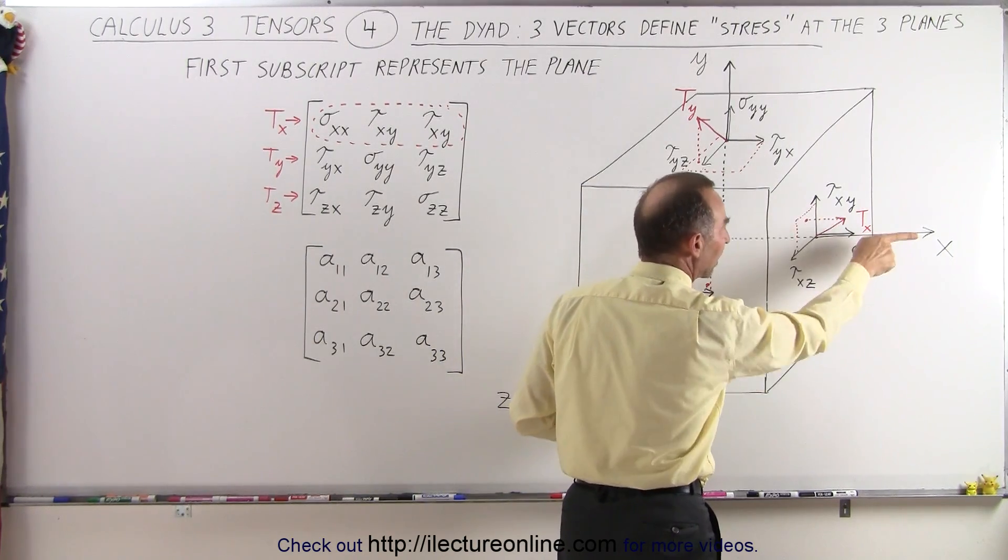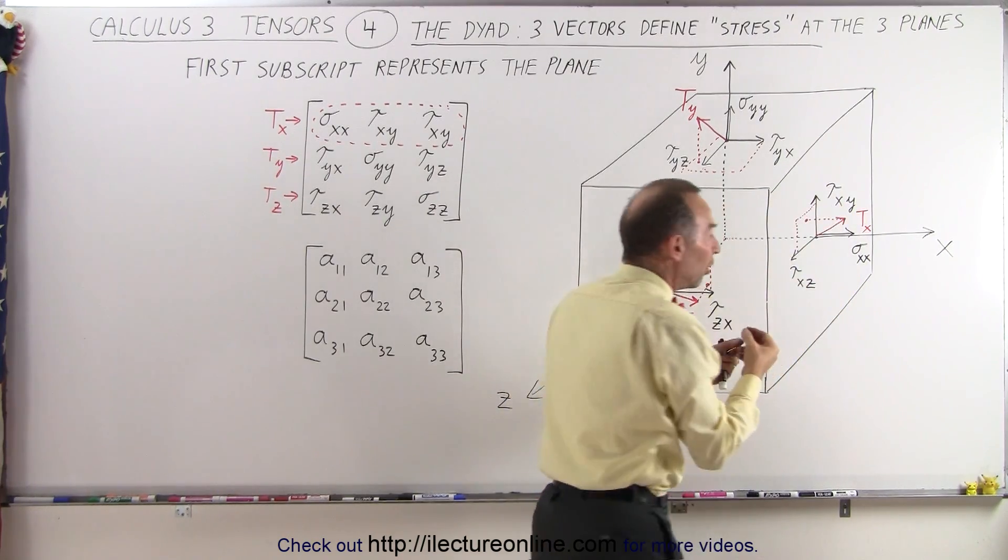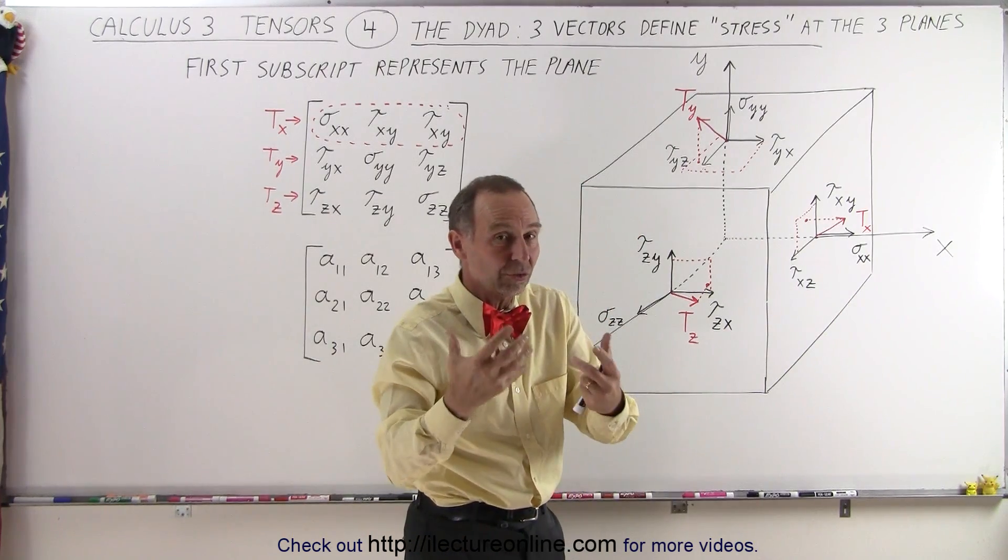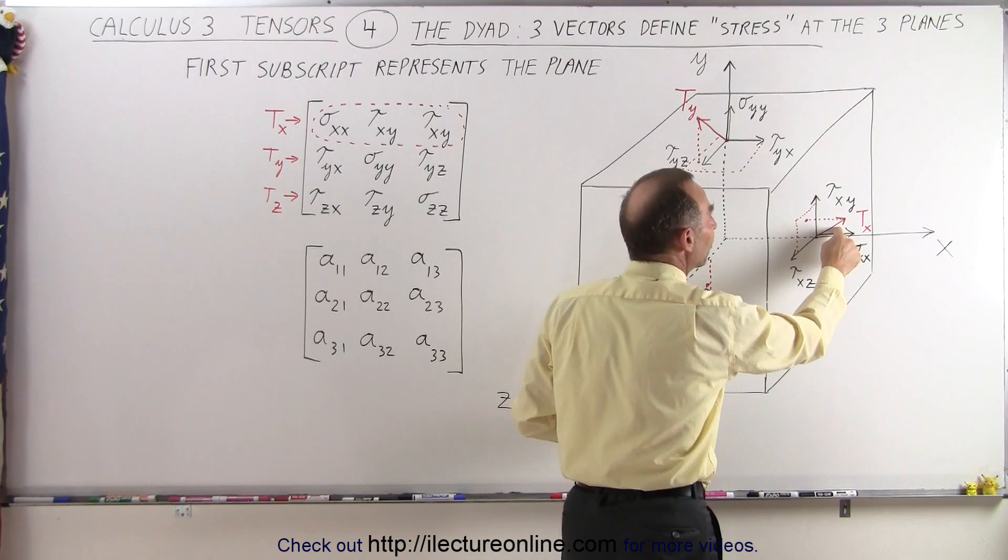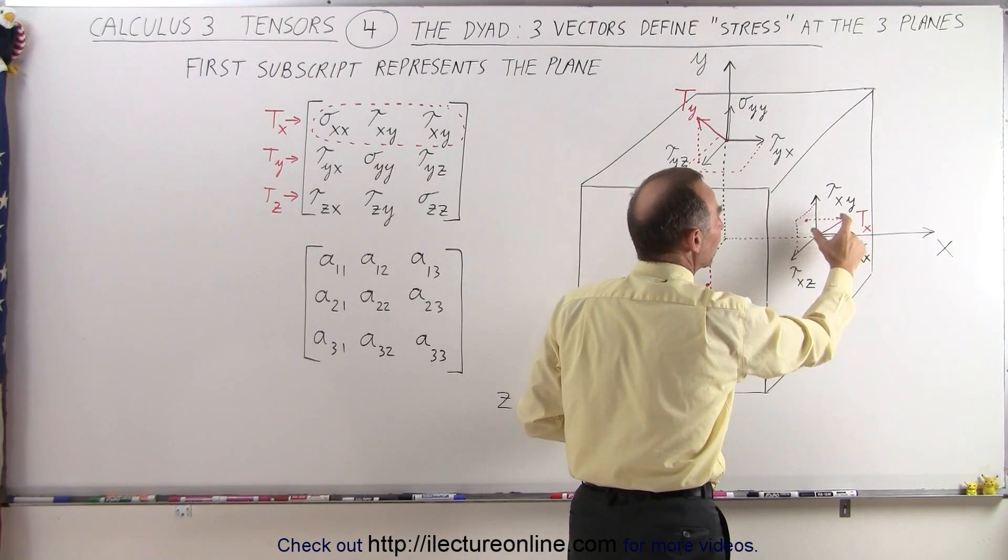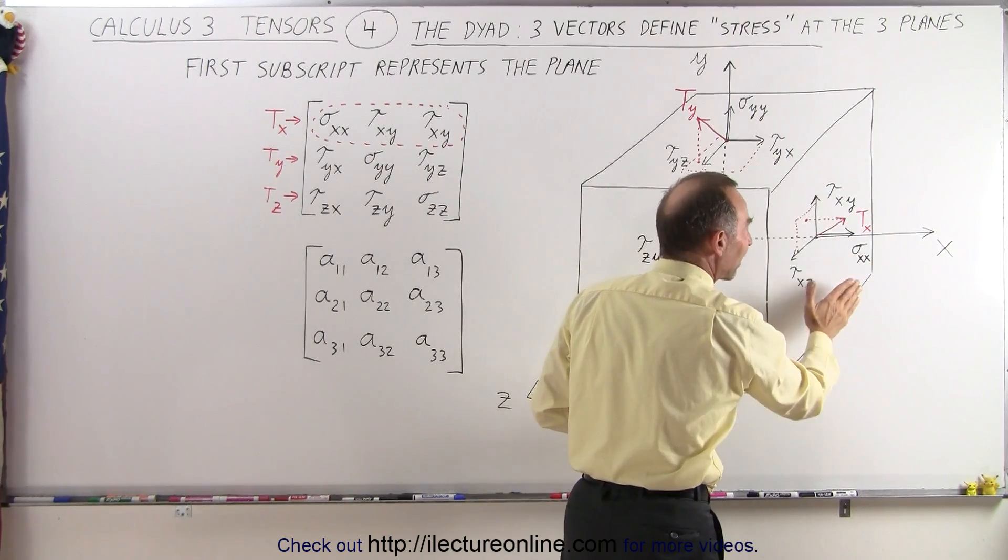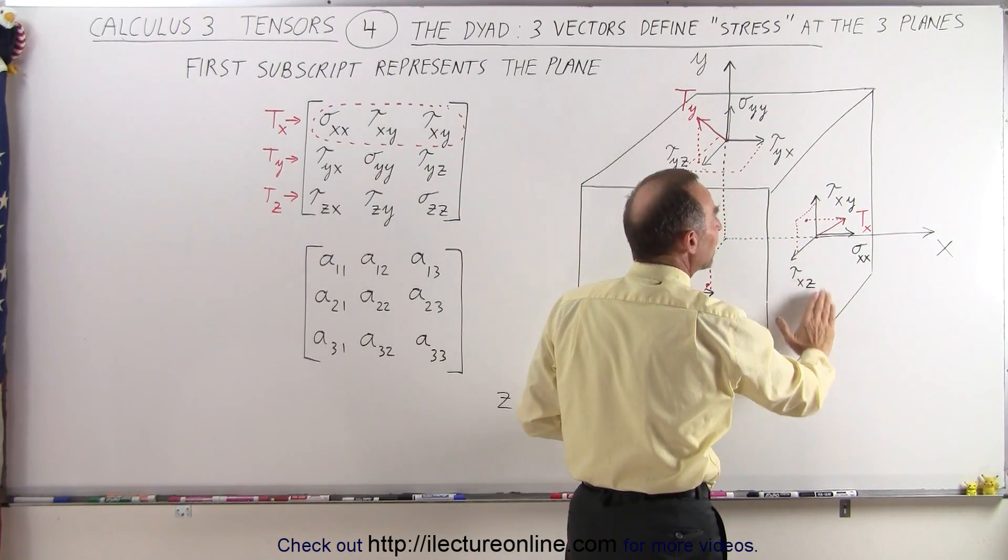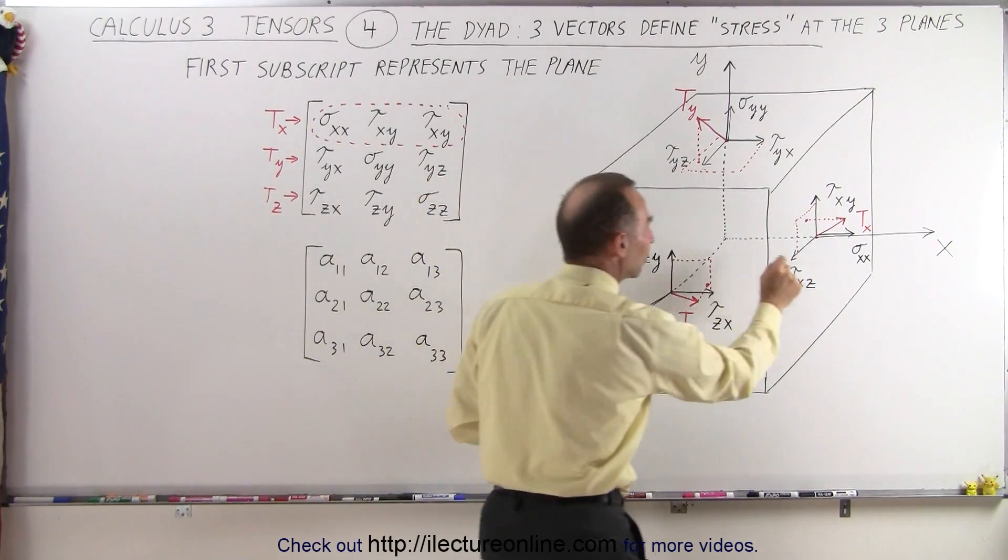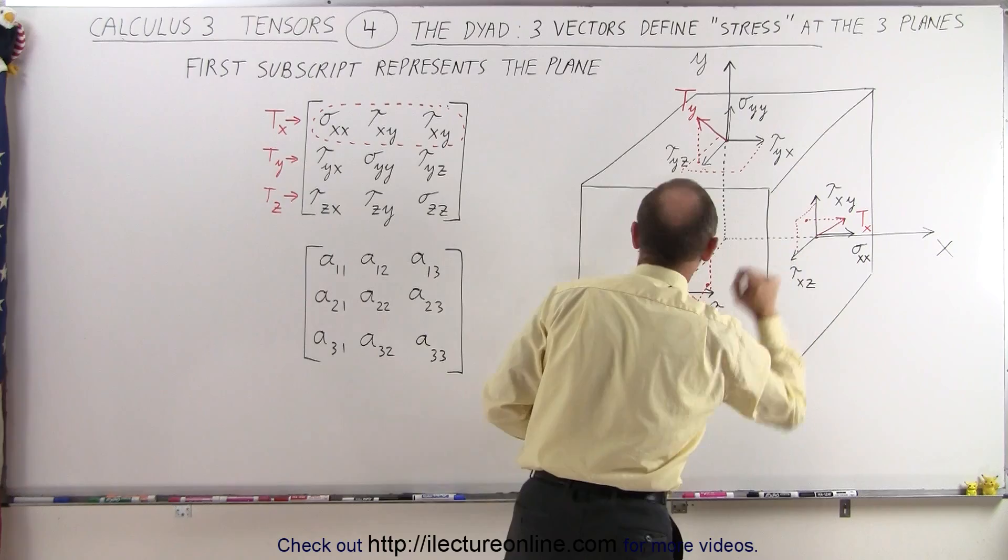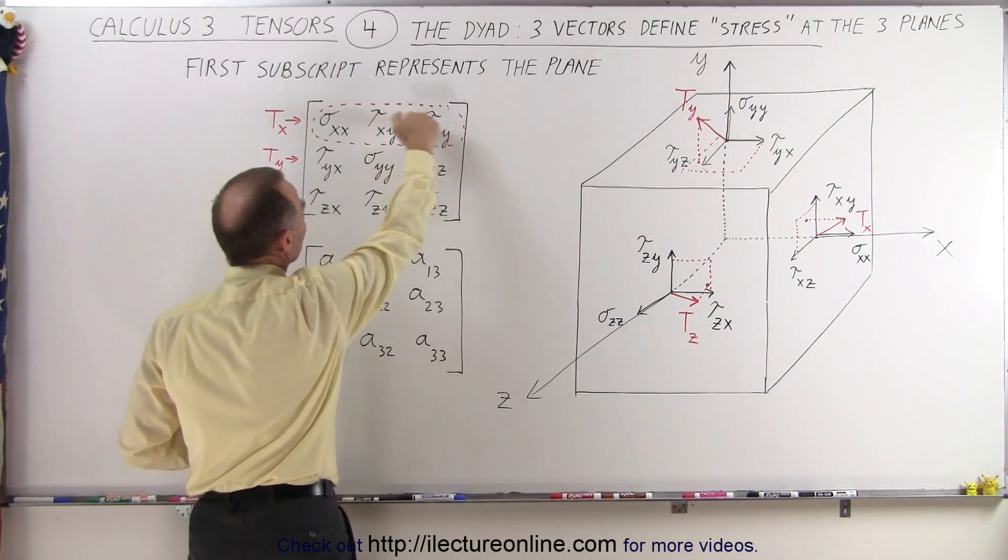We have one vector pointing in the x direction, one vector pointing in the y direction, and one vector pointing in the z direction. Those three components together add up to the tensor, or at least a portion of the tensor that is along the face that cuts across the x-axis. For example, this would be the y-z plane cutting across the x-axis, and at that location I have a vector that describes the stress, represented by these three components right here.